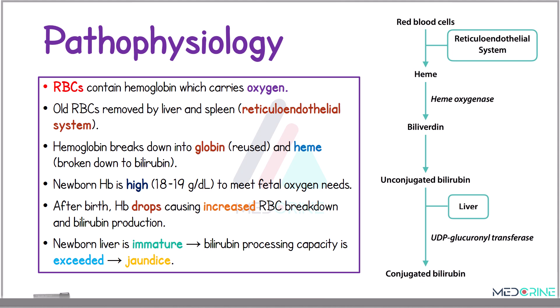When looking at the pathophysiology of neonatal jaundice, we need to look at how red blood cell breakdown occurs leading to the production of bilirubin. Red blood cells contain hemoglobin, which is responsible for carrying oxygen. Old red blood cells are usually removed by the liver and the spleen — generally what we call the reticuloendothelial system. This hemoglobin is broken down into globin, which is later reused, and the heme component that is broken down to bilirubin.